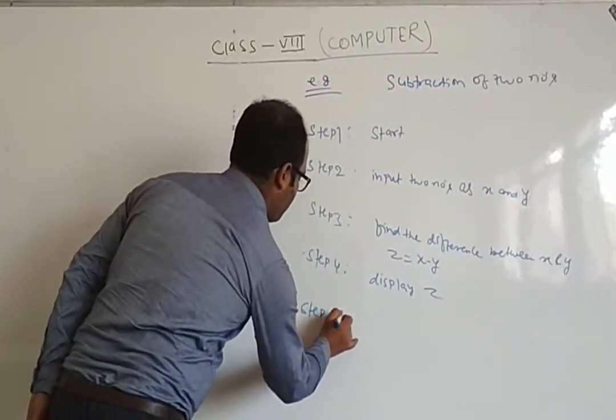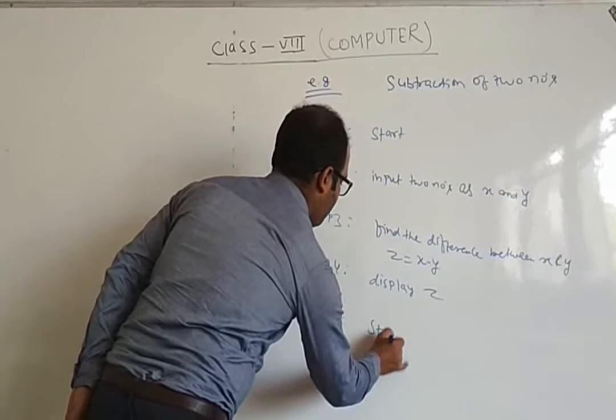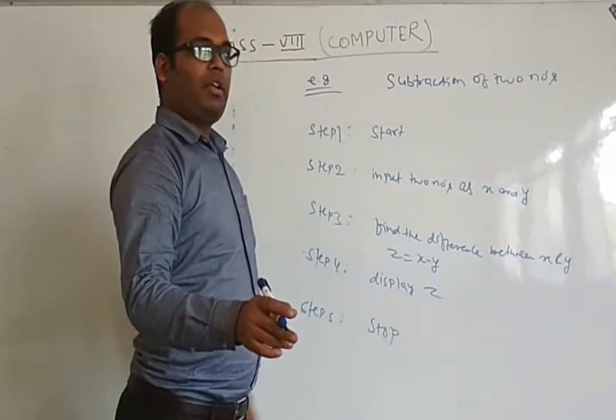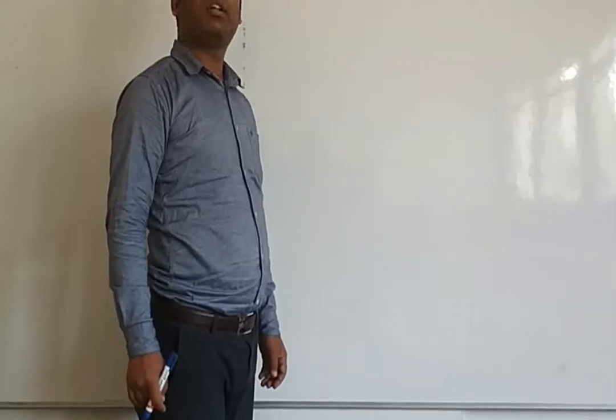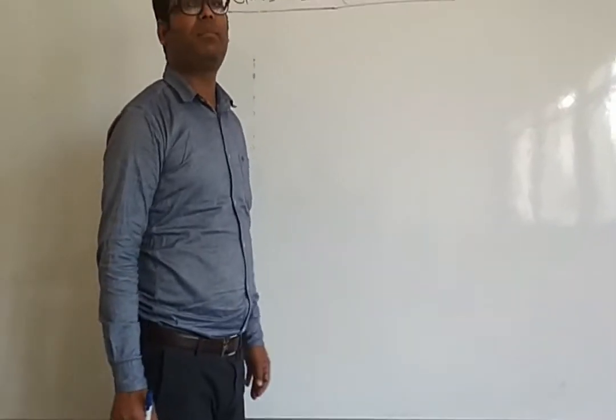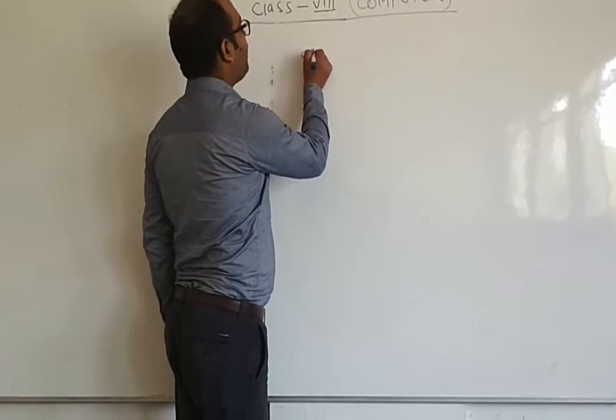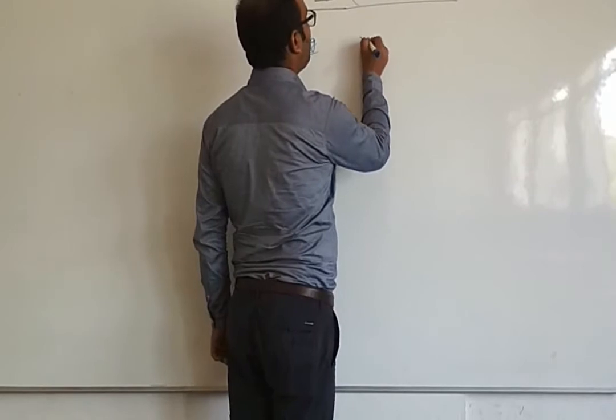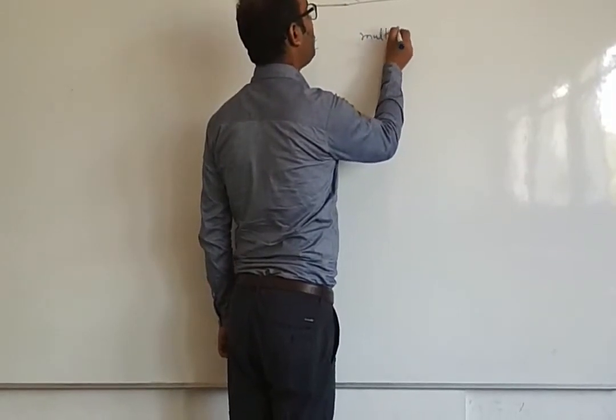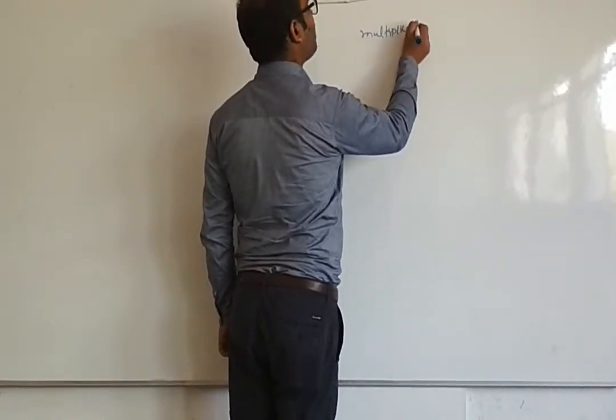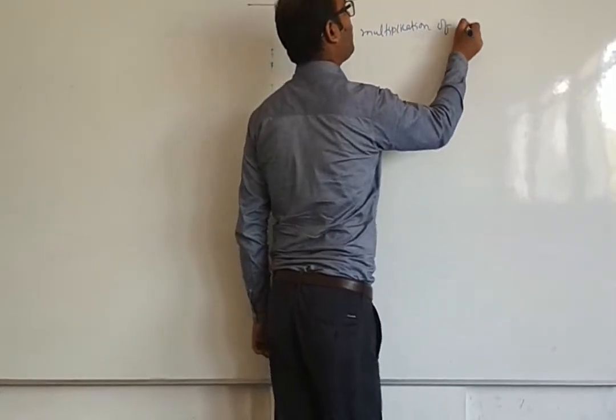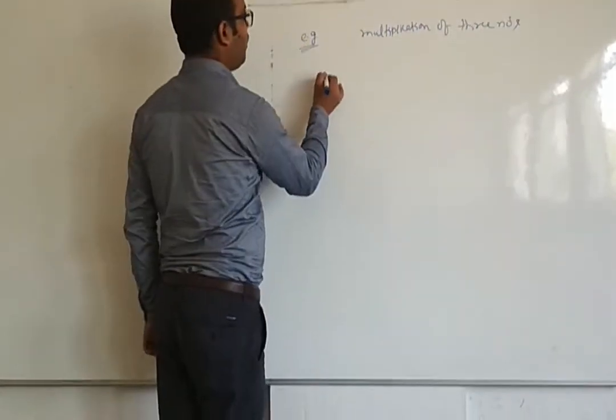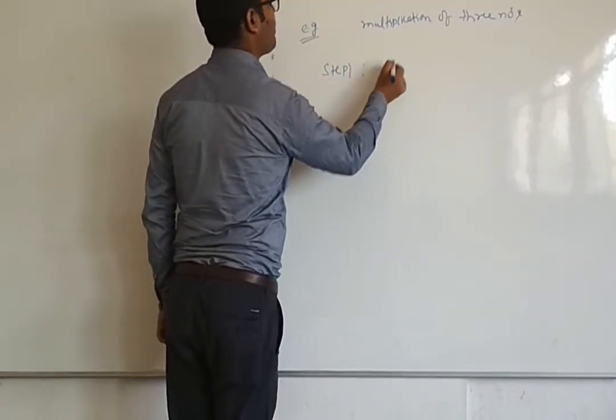So this is for subtraction. Next, now let's start how to write multiplication of 3 numbers. Step 1: Start.